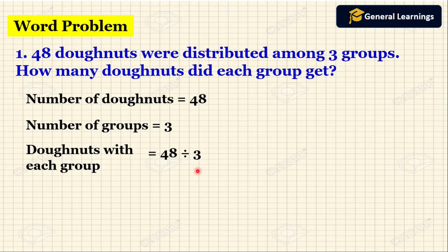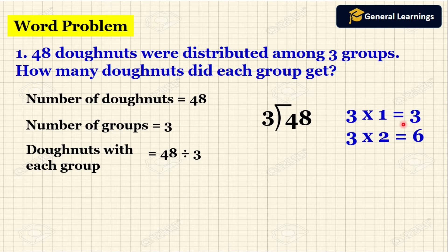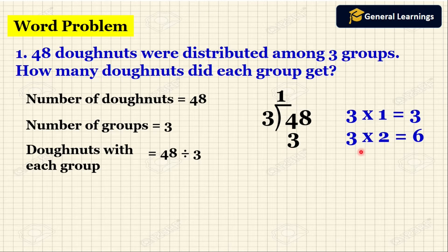Let us solve this division. We write the division as it is. Here 48 is the dividend and 3 is the divisor. First we need to divide 4 by 3. We check the multiplication table of 3: 3 ones are 3, 3 twos are 6. Since 6 is greater than 4 we should not take that, so we use 3 ones are 3. Write 1 in the quotient, write 3 below 4, draw a line, and subtract. 4 minus 3 gives us 1.